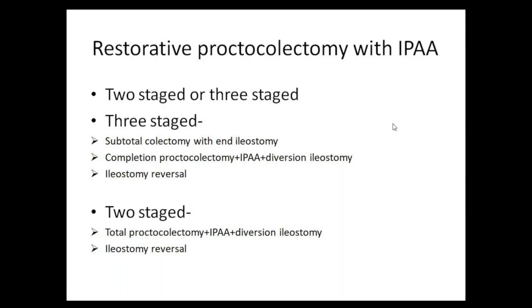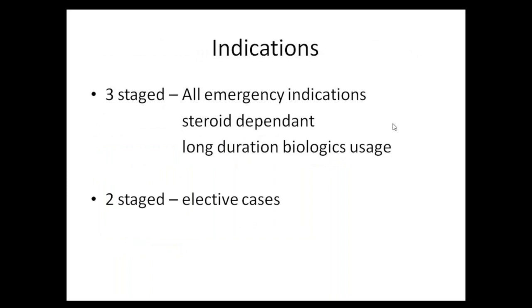Two-stage surgery for elective cases: first stage is total proctocolectomy plus IPAA with diversion ileostomy; second stage is ileostomy reversal. Three-stage surgery indications are all emergency indications above, steroid-dependent patients on long-term oral steroids, and patients with long-term biological use. In these patients, tissues are fragile, sutures may cut through, and staple lines may not hold — so anastomosis should be avoided initially.